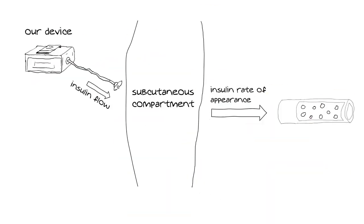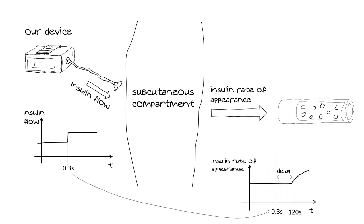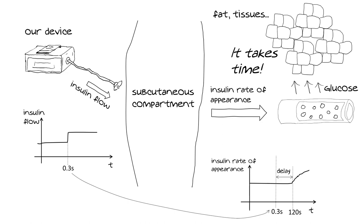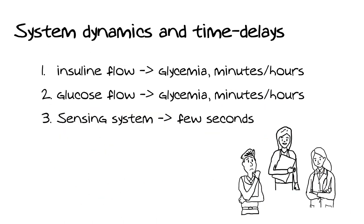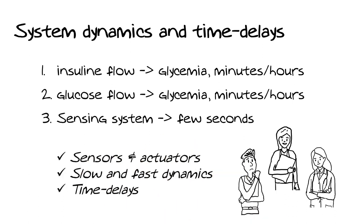Next, we figure out fast and slow dynamics and time delays. Given that our device follows the subcutaneous injection route, we have some time delay combined with dynamic changes due to the subcutaneous compartment. Fat and tissue also take some time to remove glucose from the blood. By talking to the team, we discover that the dynamics from insulin to glycemia is on the order of hours, and the same for glucose to glycemia. We assume our sensor takes a few seconds to measure glycemia.